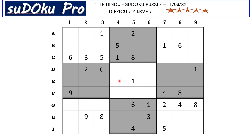Let's get started. I'm going to start with this bottom portion. There is a nine in H row blocking these three cells, so nine goes here in G4.